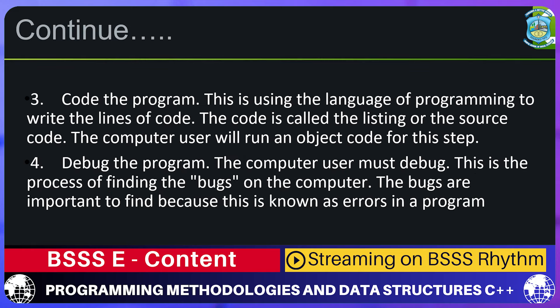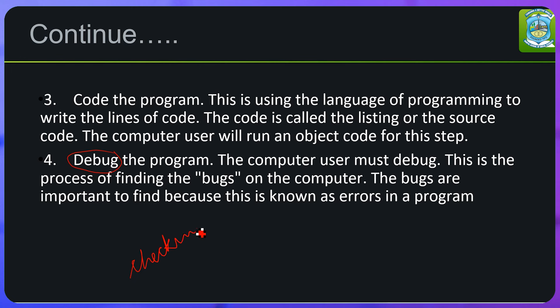Code the program means writing the program using the programming language to write the lines of code. The code is called the listing or source code; the computer user will run object code at this step. Since we are talking about C++, we will use Turbo C++ to write and run our code. Debug the code means checking for any bugs or errors — syntax errors, declaration errors, or skipped steps. C++ will prompt what the error is and in which line, making it easy to rectify.